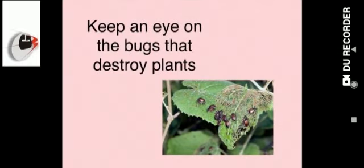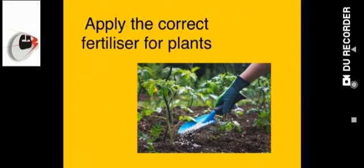We should keep an eye on the bugs that destroy our plants and always keep a regular check on them. We should always apply the correct fertilizer for the plants. So children, remember that plants and trees are very useful to us, so we should take care of them.